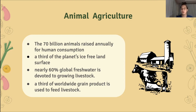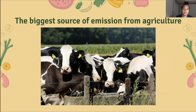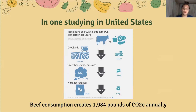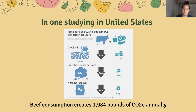Moreover, a third of worldwide grain production is used to feed livestock. Cattle are the biggest source of emissions from animal agriculture. One recent study shows that an average American diet's beef consumption creates 1,984 pounds of carbon dioxide equivalent annually. Replacing beef with plants would reduce that number by 96 percent, bringing it down to just 73 pounds of carbon dioxide equivalent.